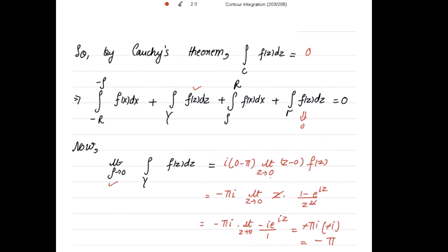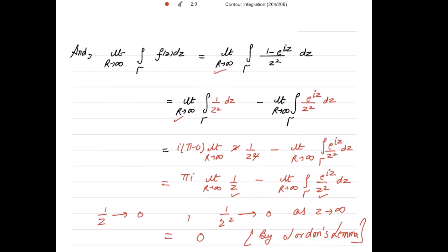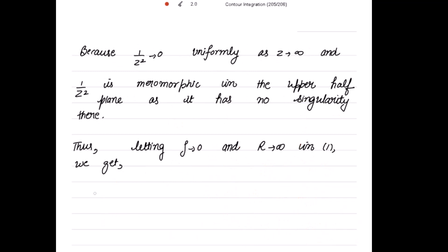Now letting ρ → 0 and R → ∞ in our equation: the integral along tau is 0, and the gamma integral gives −π. Substituting: the integral from −∞ to 0 of f(x) dx, plus (−π), plus the integral from 0 to ∞ of f(x) dx, plus 0 (by Jordan's lemma) equals 0 by Cauchy's theorem.